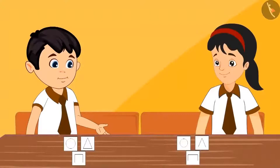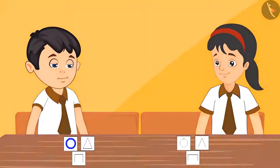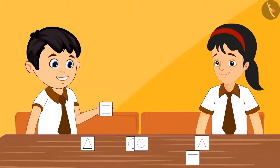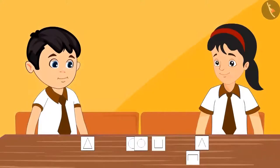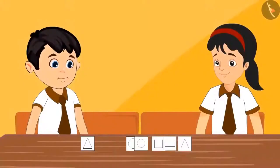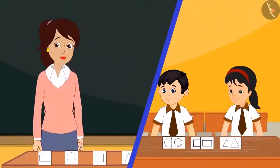Pinky, look here — there is a circle on this card. We should keep it separately. Yes Chotu, I also have a card on which a circle is made — we can keep these two together. Now let us get to this shape — this shape is made of four lines, we can keep it aside. Yes Chotu, and this shape is also made of four lines — we should keep it with the other four-sided shape. And now there is the shape made of three lines — we should keep it separately.